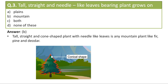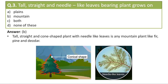So these trees have adapted to the conditions of the mountains and they are tall, straight, and conical shaped. Also, the leaves of the trees are needle-like. If the leaves were broad, snow would have rested on them. But needle-like leaves made it easier for the tree to survive the harsh climatic conditions. Hence the correct option is option B — tall, straight, and needle-like leaves are found on plants that grow on mountains.